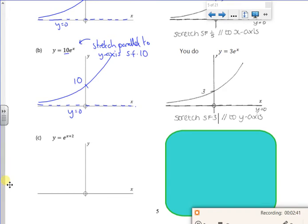Then I've got this one. It's e to the x plus 2. So that would be, I'm replacing x with x plus 2. So that's going to be a translation of minus 2, 0. So I'm shifting everything to the left 2. So I've still got that same idea, the graph is still going up.